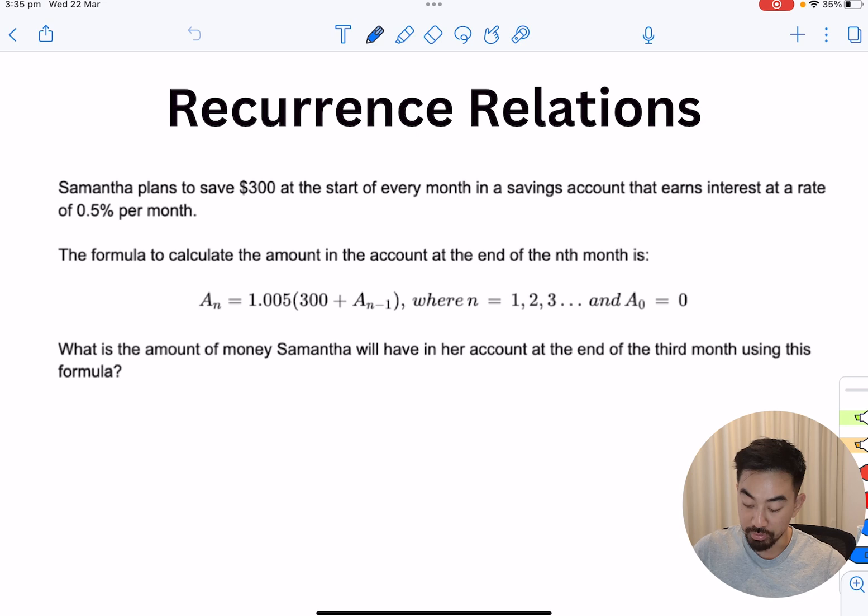So Samantha plans to save $300 at the start of every month in a savings account that earns interest at a rate of 0.5% per month. The key thing you need to know here before I even start is you need to look out for if it's either at the end or the start. That's a super important detail and we'll go on to see how that affects the question.